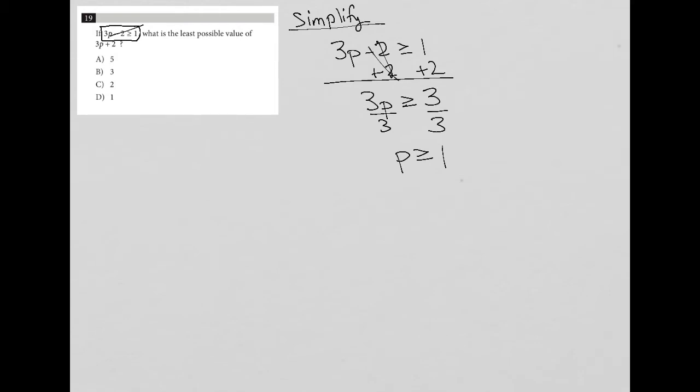So it says if 3p minus 2 is greater than or equal to 1, what is the least possible value of 3p plus 2? Well, if I'm looking for the smallest value that 3p plus 2 can be, and I know that p must be greater than or equal to one, then I would want the smallest number that p itself can be.